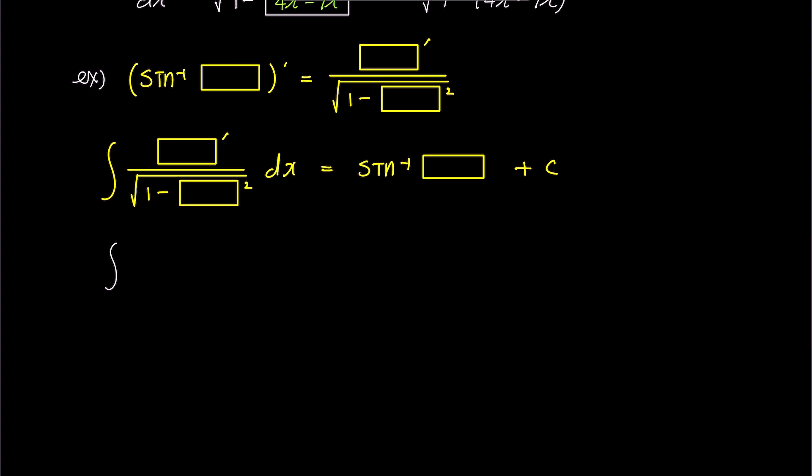Here, we have the integral of 1 over x times square root 1 minus ln x squared. Can you identify which term should be the box? If it's not clear, let's make a slight adjustment to the problem.